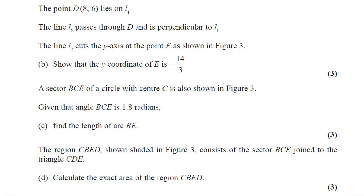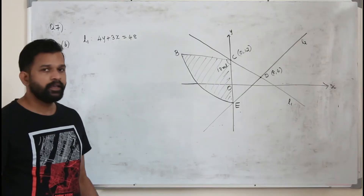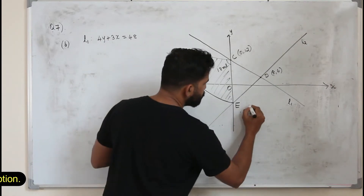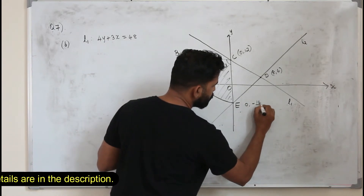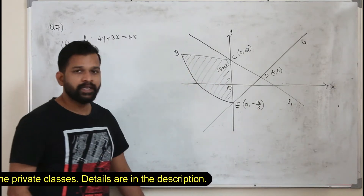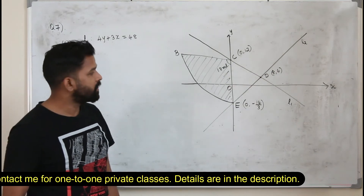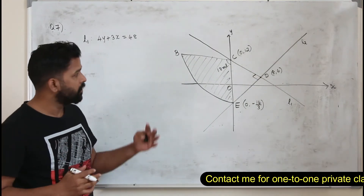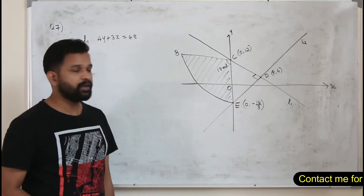The point D at (8, 6) lies on L1. The line L2 passes through D and is perpendicular to L1. The line L2 cuts the y-axis at point E. Part B: show that the y-coordinate of E is minus 14 over 3. This question carries three marks. In part B they want you to find the y-intercept of straight line L2, given that these two lines are perpendicular.